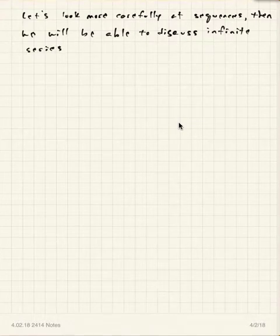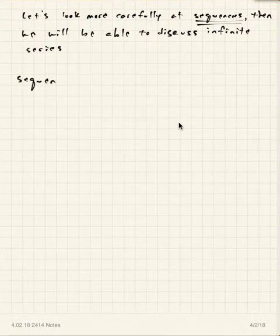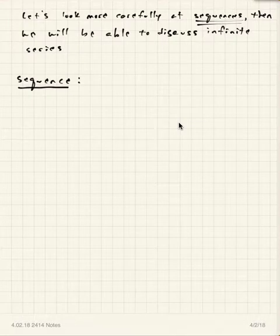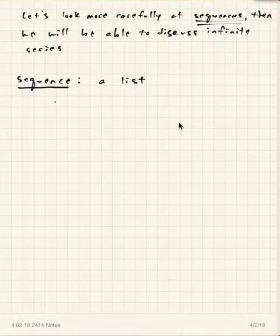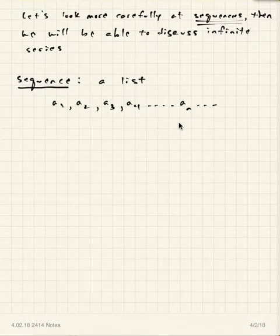So let's look more carefully at sequences. A sequence is, first of all, a list of numbers — it could be written as a₁, a₂, a₃, and so on. Notice there are no addition signs; it's just a list of numbers. Another way to look at a sequence is that it is a function whose domain is the set of natural numbers — the counting numbers 1, 2, 3, and so on.